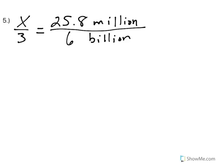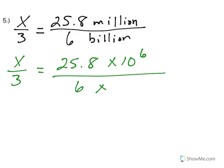In number 5, when I see million and billion, I'm going to change those to scientific notation. So I have x over 3 equals, I'm going to keep the 25.8, I'm just going to say million is times 10 to the 6th and billion is times 10 to the 9th. That's going to make my math easier to work with.